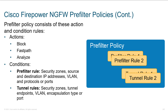The pre-filter policy has three actions available: analyze, which means continue doing more analysis; fast path, which punts the packet and sends it to its next hop immediately; and block, which does a drop. Fast path is what we like to find, because it means the traffic doesn't need further analysis and we can move it across the firewall immediately. That keeps our resources lower and gets the packet right out of the way, making everything move smoothly.